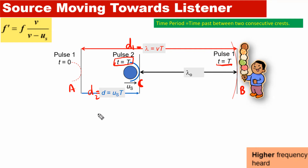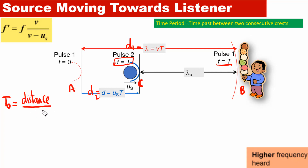What we need to find is the time observed by the observer between the two crests — that is, after receiving pulse 1, how long before the observer receives pulse 2. Let's call this observed time period T₀. To find T₀, we need to find the distance between the two crests and divide by the speed of the wave V_W. The distance between the two crests is D1 minus D2.